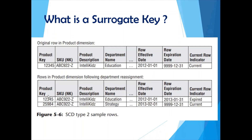Every table in a database needs a primary key to maintain integrity and ensure data is unique and not duplicated. When maintaining a type 2 dimension, you insert data with the same business key again, which is not possible if that business key is your primary key. So you need to add an auto-incremented numerical key and make that column your primary key. Your business key should not be your primary key — your auto-incremented ID should be. This is what is called a surrogate key.